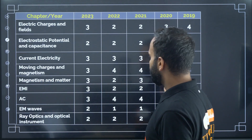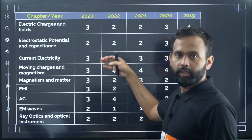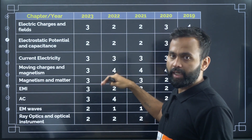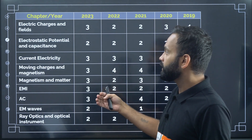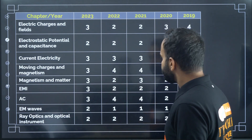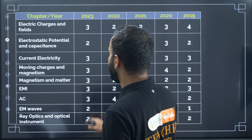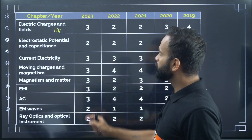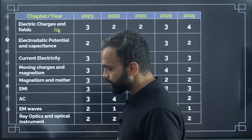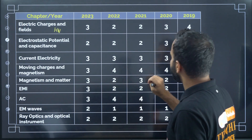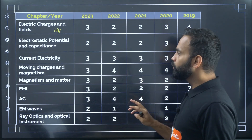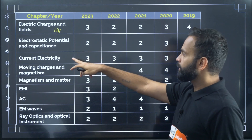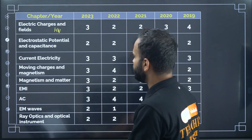Here is the analysis of the last five year papers. Starting with 12th syllabus chapters: Electric Charges and Fields is a high weightage chapter — every year they ask two to three questions. Electrostatic Potential is also a high weightage chapter; they ask about two questions on average, and in 2018-19 they asked four questions. That's why I have put Electrostatic Potential and Capacitance in the high weightage category.